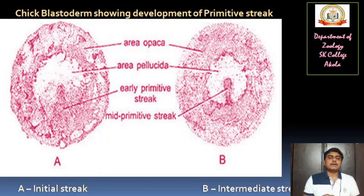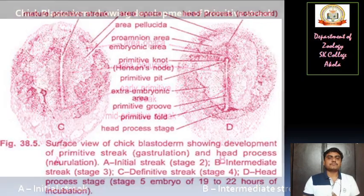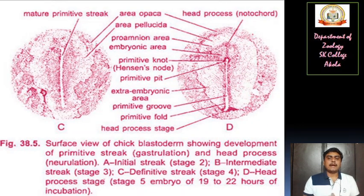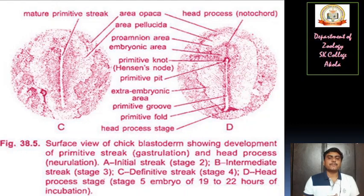In the second diagram, diagram B, the intermediate streak has been formed. The mature primitive streak in the area pellucida gets enlarged in size as shown in figure C, which is the definitive streak at stage 4. In figure D, you are able to see the head process stage — stage 5 of the embryo at 19 to 22 hours of incubation.